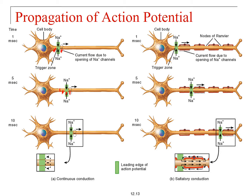Maybe further back you've got an area where a second action potential can begin. At ten milliseconds, in one area you've got current flow in; in another area sodium is coming in; in another area the membrane is moving towards threshold; and an action potential is beginning with depolarization starting. One segment is in a refractory period, and further along you can start another action potential.